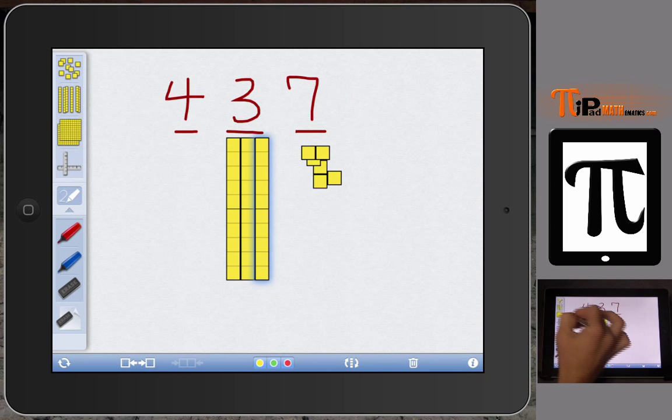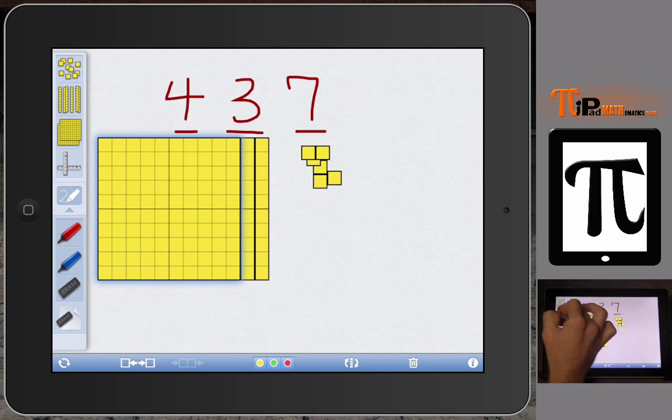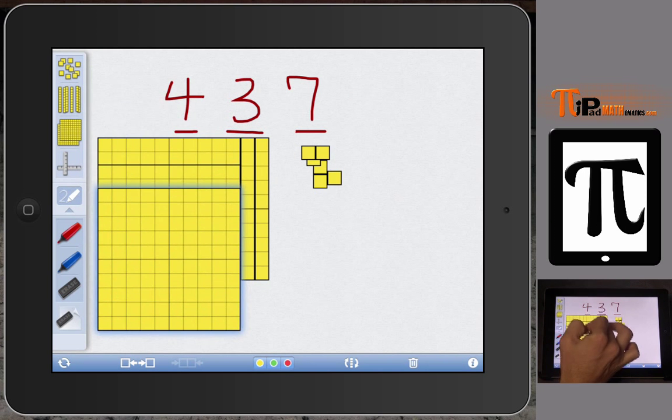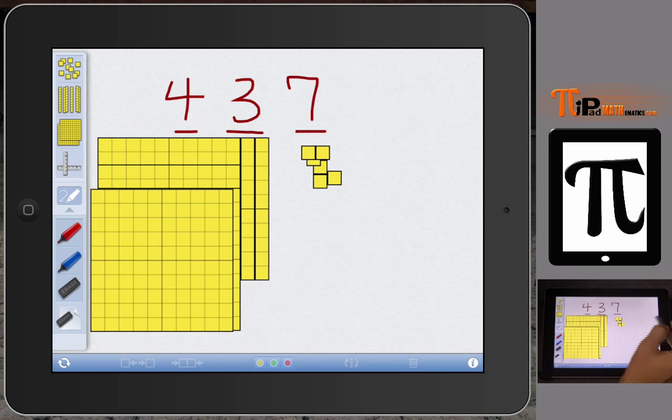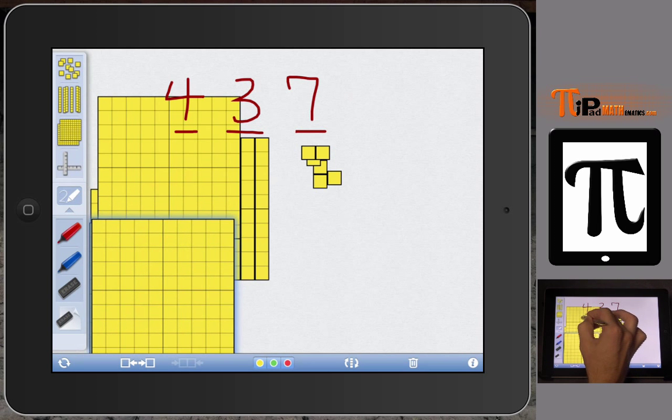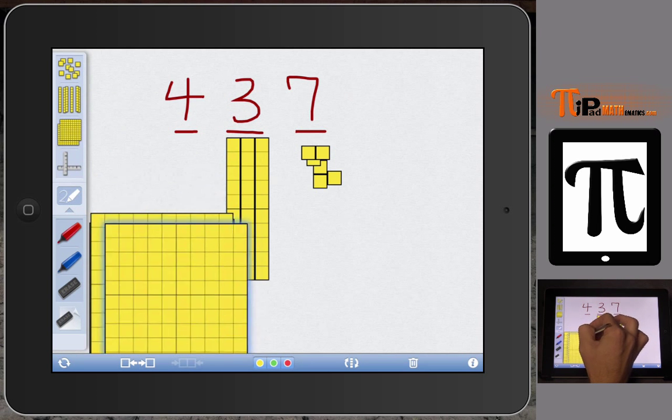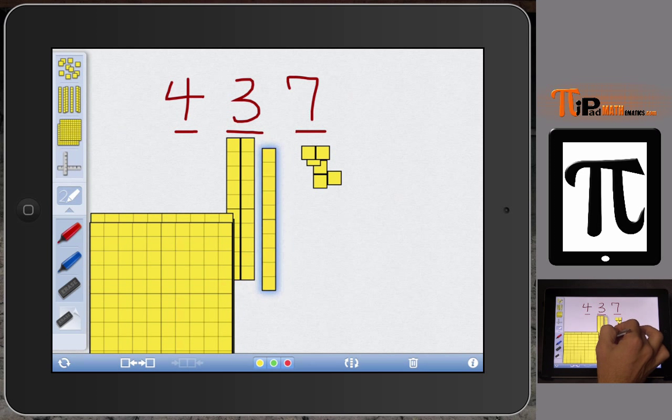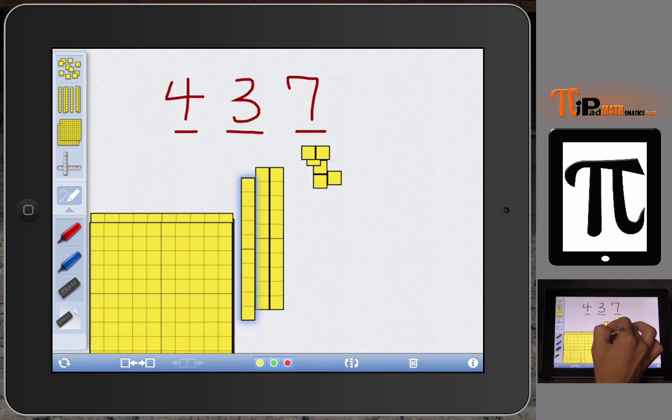And then I have three longs or three tens, and then I have four hundreds.